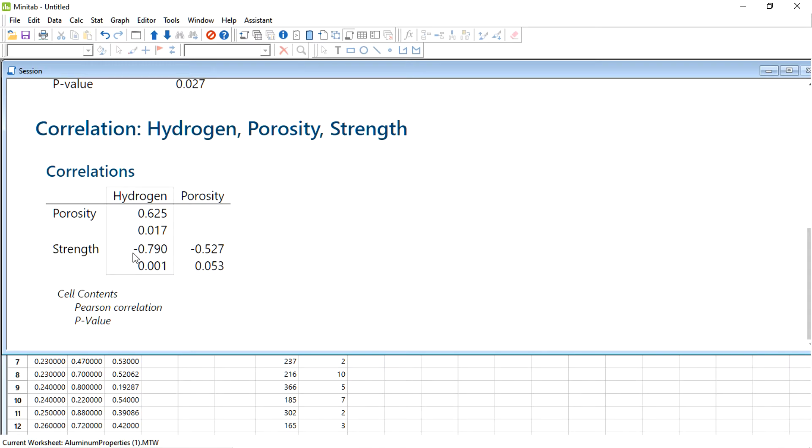Now strength versus hydrogen, again you can see there is a negative correlation, but since the p-value is not high, we cannot say that strength and hydrogen have some relation. Now you can see porosity and strength has some relation. There is a negative correlation and the p-value is also greater than 0.05. Now we can say that porosity and strength, these two variables are correlated and they are negatively correlated. That means if the porosity increases, strength decreases.